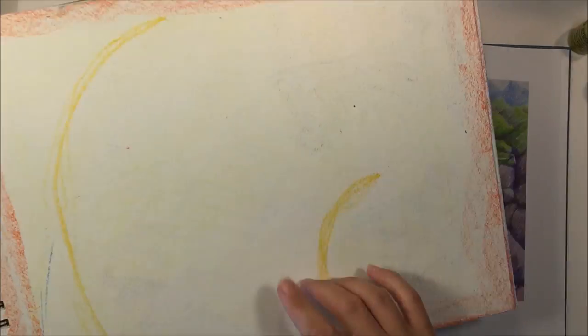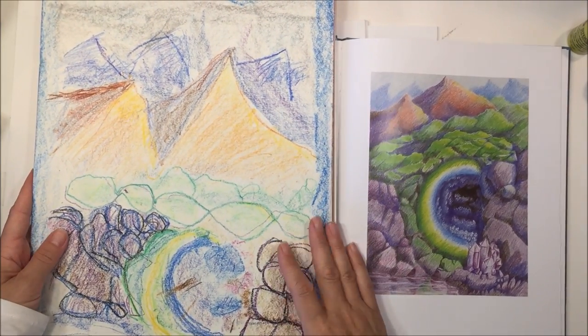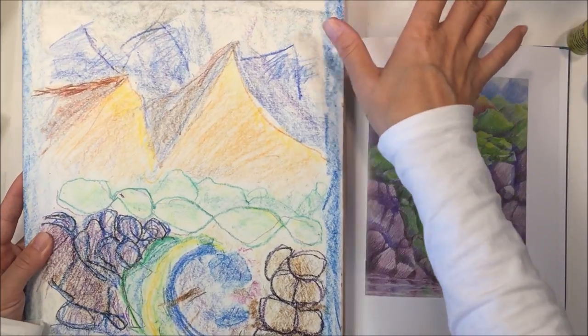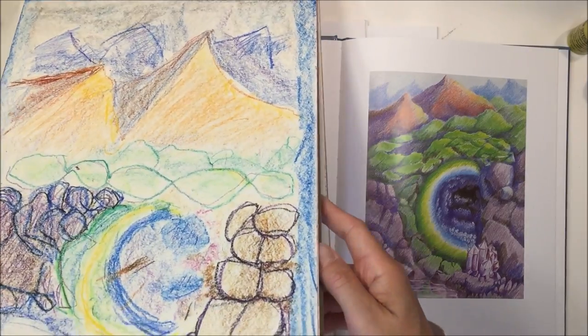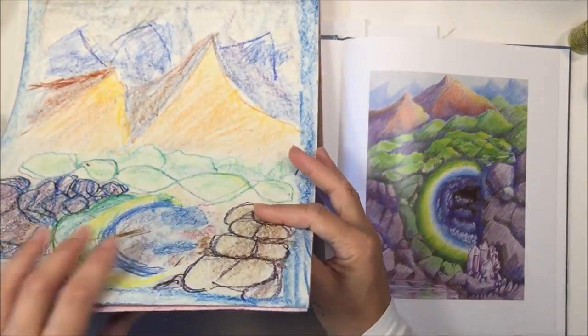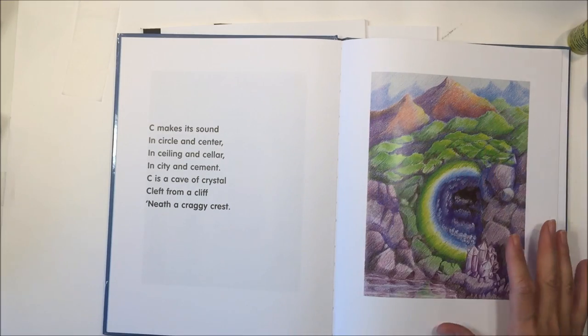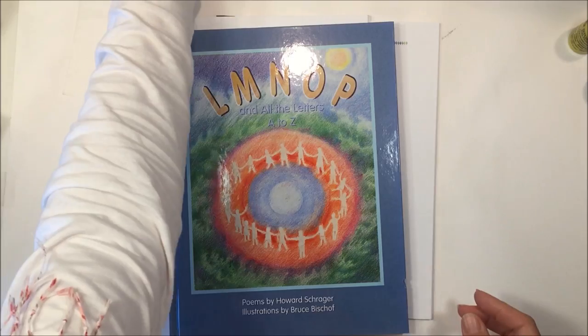When we first started homeschooling, I didn't have a chalkboard. So I did this drawing in a separate book and then my son copied the drawing. Later when we got a chalkboard, I started to do these chalk drawings. And then whoever my student was at the time could then copy that from the chalkboard.